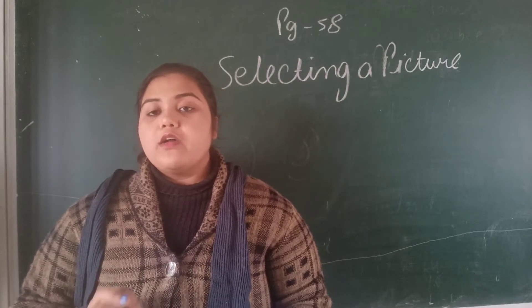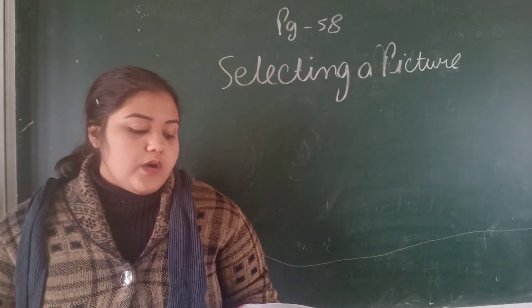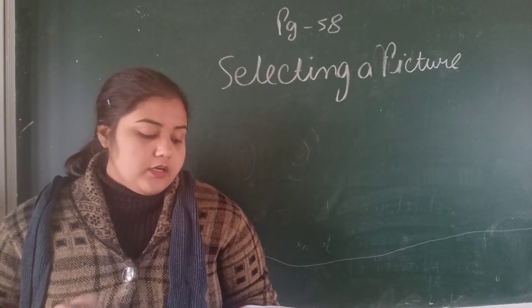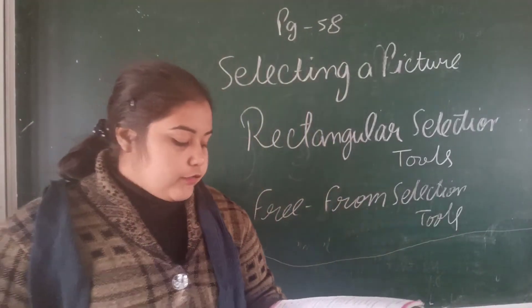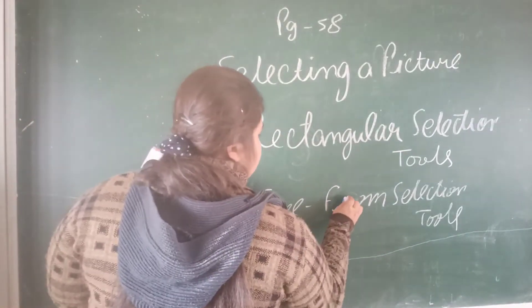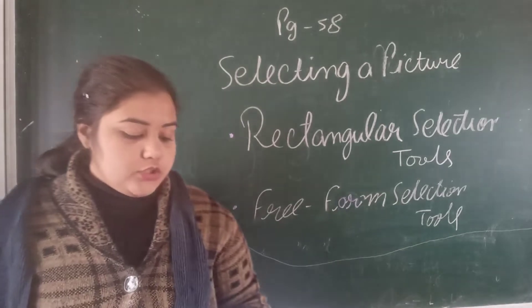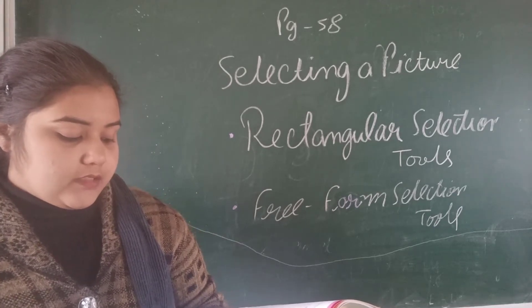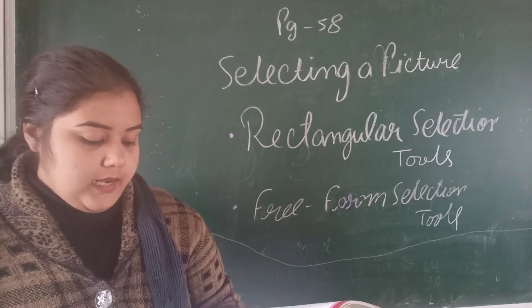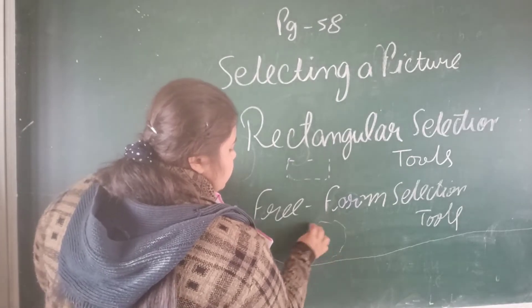Suppose you made a picture, did all fill in color and necessary settings. Now you want to modify the picture. Going to the selecting a picture option, there are two types of selection tools: rectangular selection tool and free form selection tool. In selection shapes when we click, we can see rectangular selection as well as free form selection.